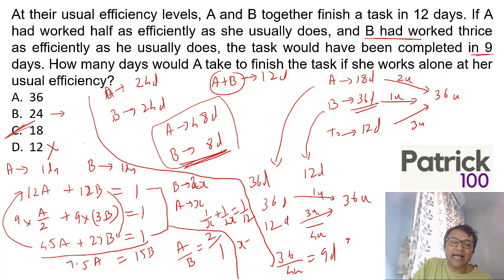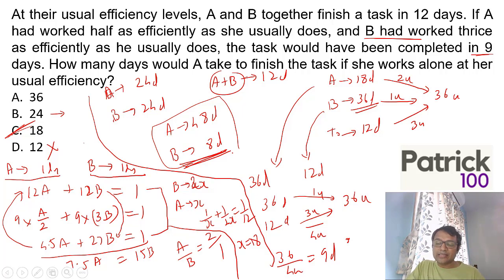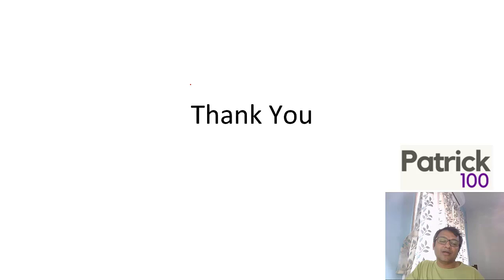If A does double the work as B, A takes half as many days. If A takes x days to complete work, B takes 2x days. 1/x + 1/(2x) = 1/12. If you solve, you get x=18, same option. I repeat: We assume A is amount of work by A per day, B by B per day. Together 12A+12B=1 because in 12 days they complete the work. A does half, B does thrice: 9×(A/2) + 9×3B = 1. Solve simultaneously: 7.5A = 15B. From that, A/B = 2:1. A is double as efficient as B, which means B takes twice as much time as A. Substitute and get x=18, either way you can solve.